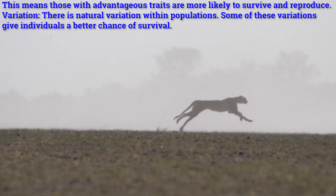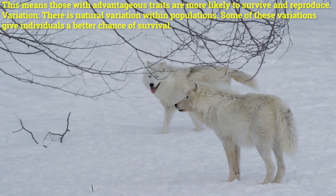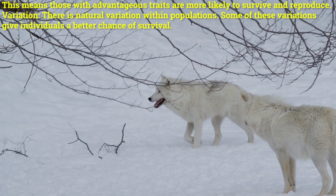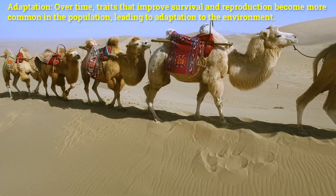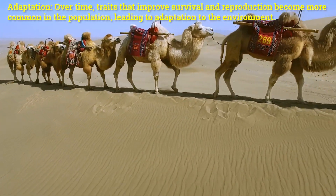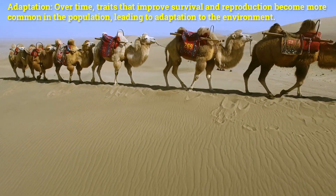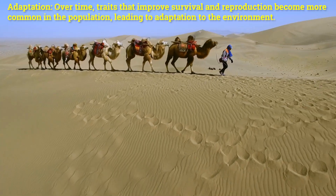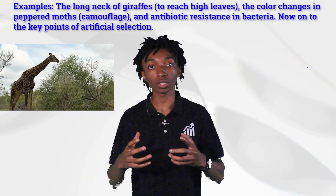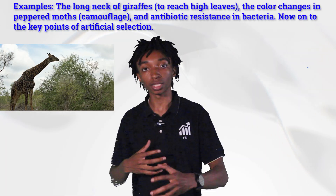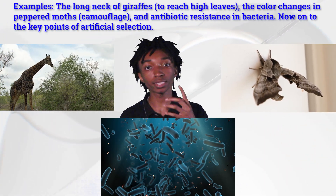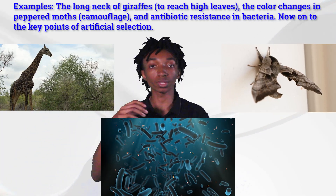Key point number two — variation: there is natural variation within populations, and some of these variations give individuals a better chance of survival. Key point number three — adaptation: over time, traits that improve survival and reproduction become more common, leading to adaptation. Examples include the long neck of giraffes, color changes in peppered moths, and antibiotic resistance in bacteria.